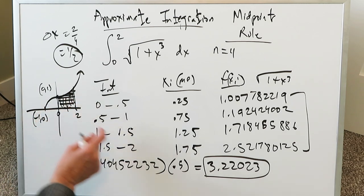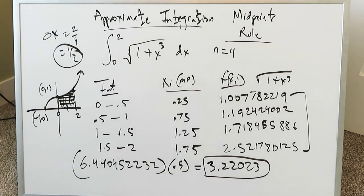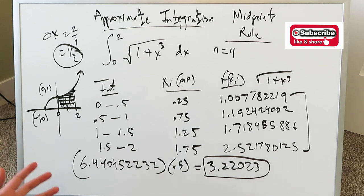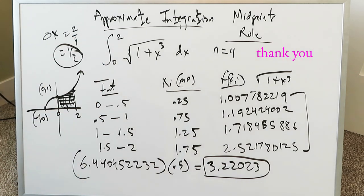This region from this interval 0 to 2 has an area 3.22023, a definite integral that cannot be solved by traditional approaches and you must use some form of approximate integration to handle this specific integrand and that right there is perhaps the most useful and beneficial property of approximate integration. Thank you for watching this video, have a good day.